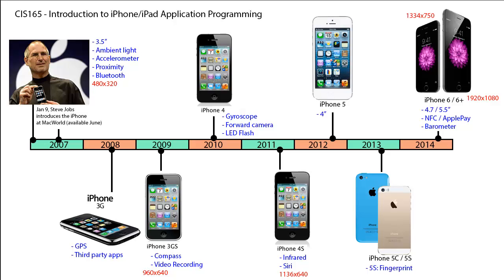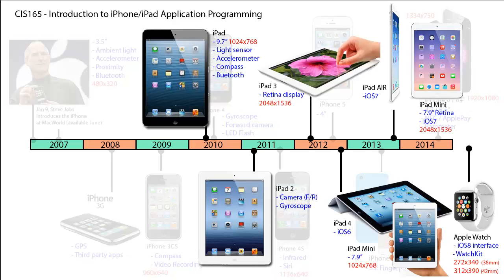Looking at the different iPhones, there are different sizes, and that's one of the challenges as a designer — which phone are you going to develop for, or do you want to develop for all of them? That would be considered a universal app. Then to complicate matters, Apple introduced another device in 2010: the iPad. The iPad was 1024 by 768, used the same operating system, and included a light sensor, accelerometer, compass, and Bluetooth. It was improved with the iPad 2, which added front and rear facing cameras and a gyroscope. The iPad 3 brought further resolution with the retina display — a very sharp, high resolution display at 2048 by 1536.